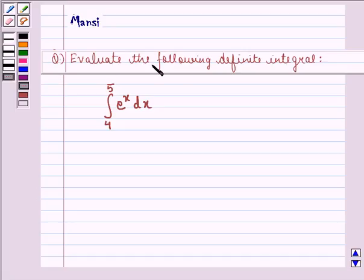The question says evaluate the following definite integral: the integral of e raised to power x dx where the lower limit of integration is 4 and upper limit of integration is 5.